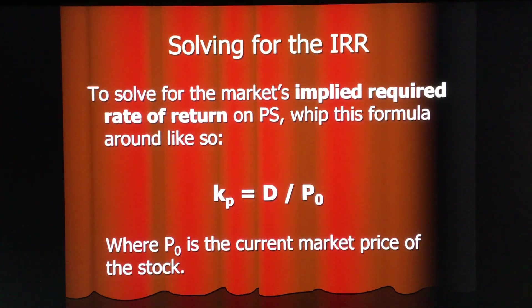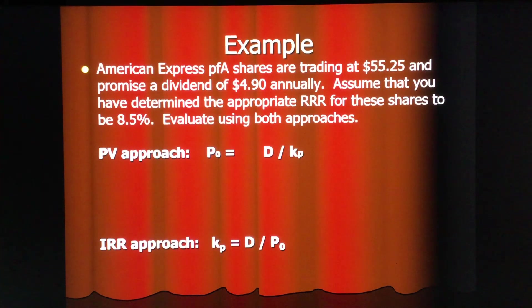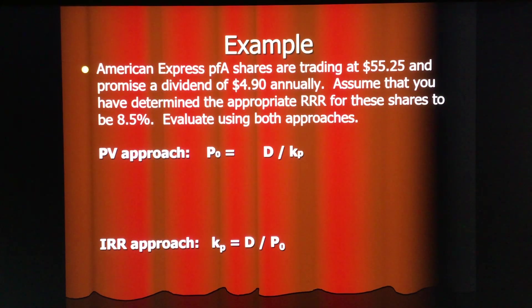That's the basic valuation model. We can also rearrange this formula to solve for the internal rate of return, which is the implied required rate of return. Solving for k sub p, you simply divide the dividend amount by the price of the stock — P sub zero is the current market price. Let's look at an example: American Express preferred A shares are trading at $55.25 and promise a dividend of $4.90 annually. Assume the appropriate required rate of return for these shares is 8.5 percent.